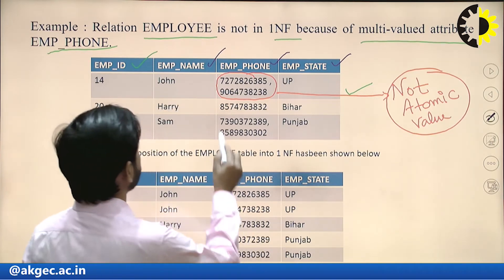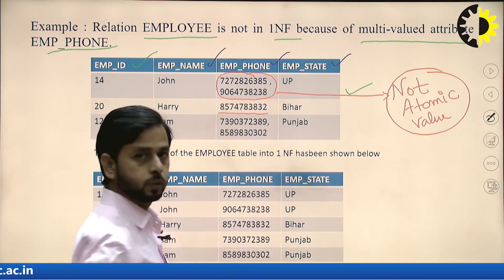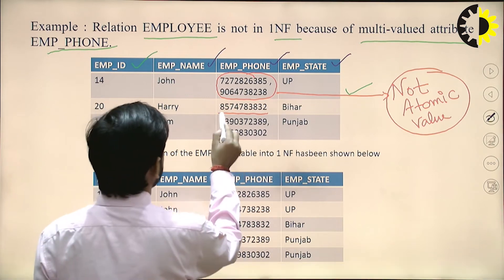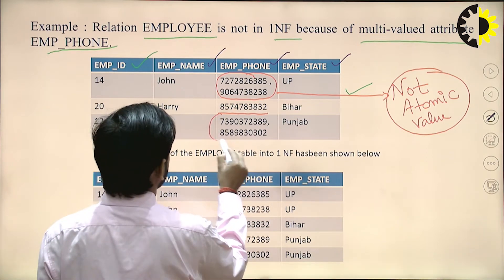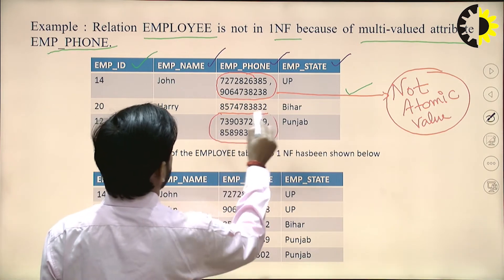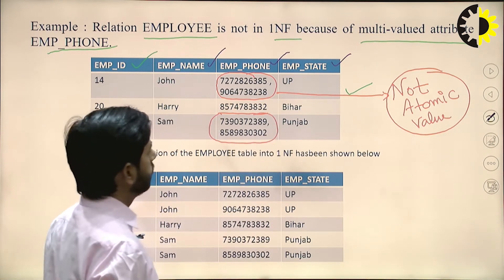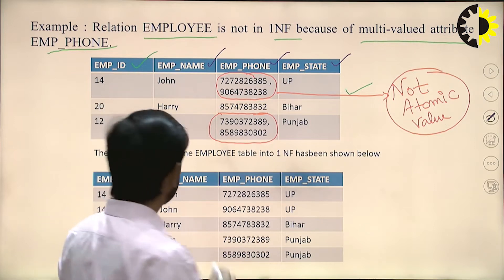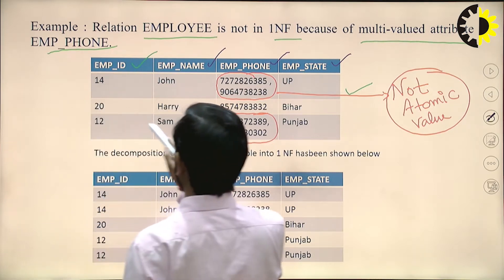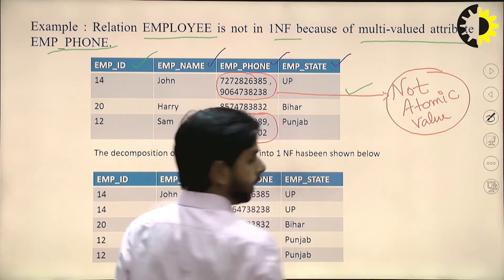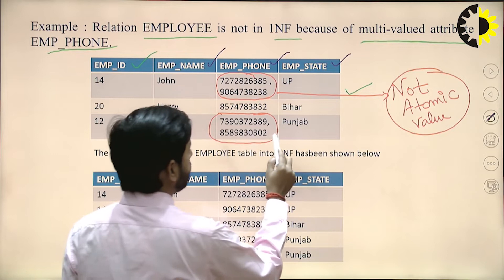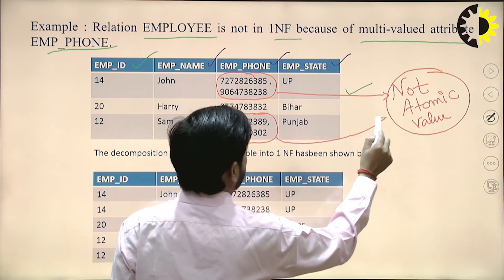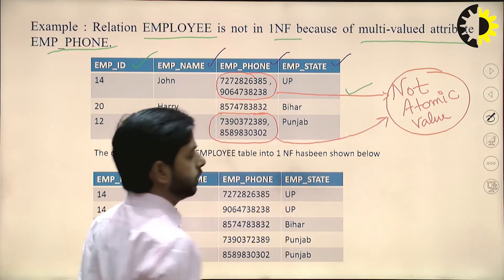Corresponding to some records there is only one atomic value. Consider the case of SAM: SAM's ID is 12 and there are multiple phone numbers — this is also not an atomic value.